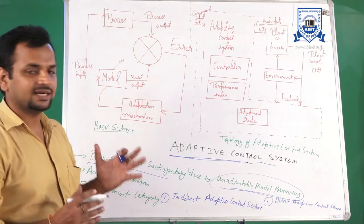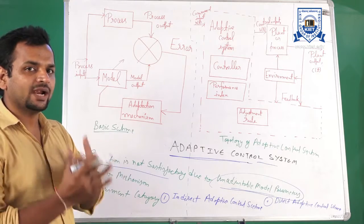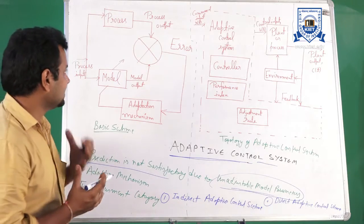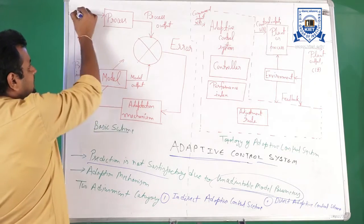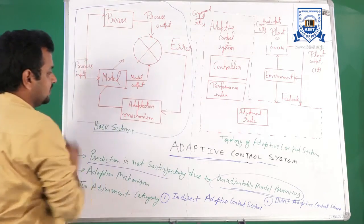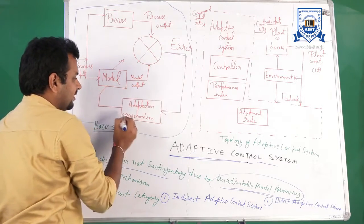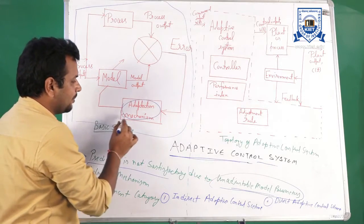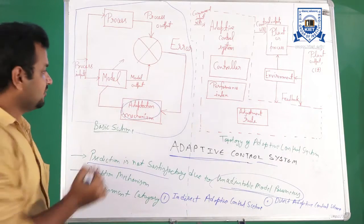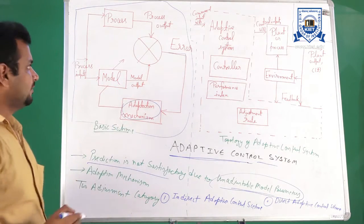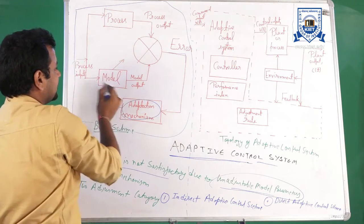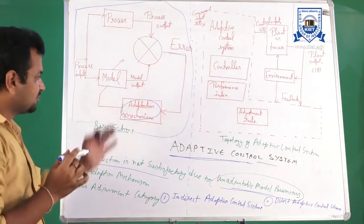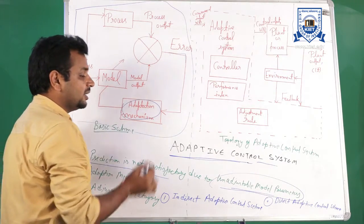There are certain types of adaptive mechanisms to adjust the model parameters according to the error in the adaptive control system. The basic block diagram of the adaptive control system shows that if an error is present, the adoption mechanism compensates for the effect of unadjustable model parameters. The predictive model is already there, but the adoption mechanism allows you to compensate the error.